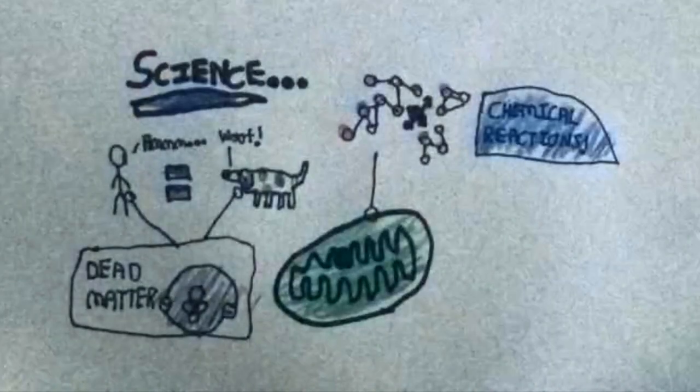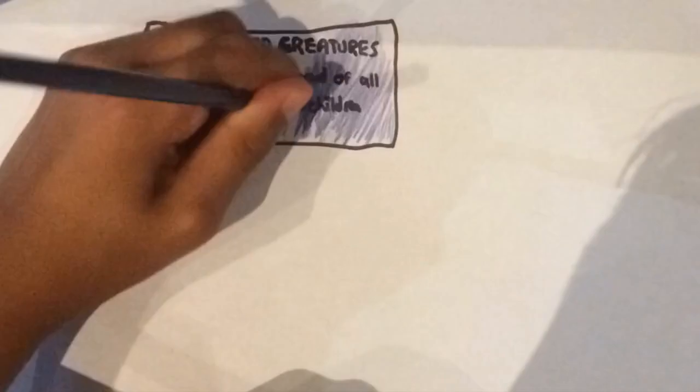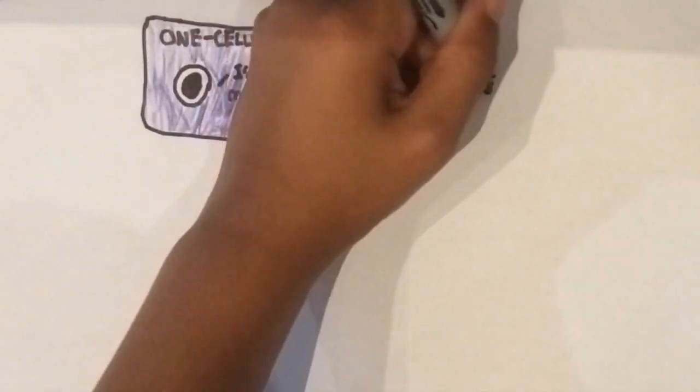We learned about the trillions of chemical reactions that happen within us. Eventually, we learned about the countless species that came before us and that we are descendants of one-celled creatures.